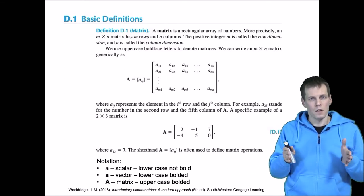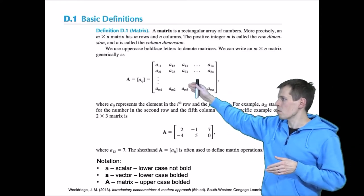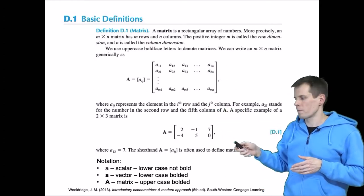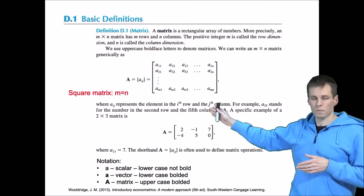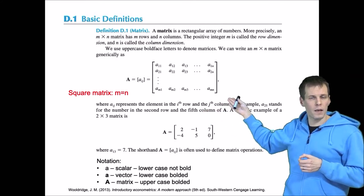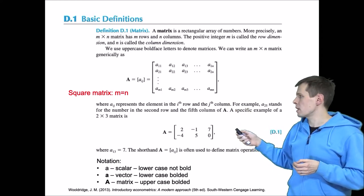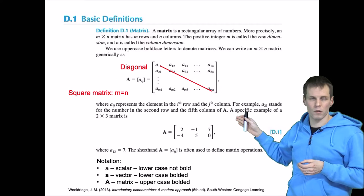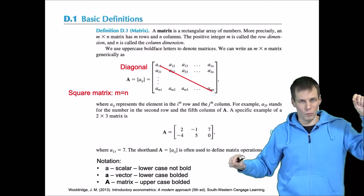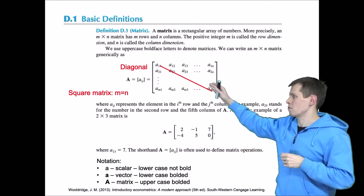A matrix has m rows and n columns — we always state the row number first and then the column number. If the number of rows and columns are the same, it is called a square matrix. A square matrix has a diagonal, which consists of the elements running from the top-left corner to the bottom-right corner.